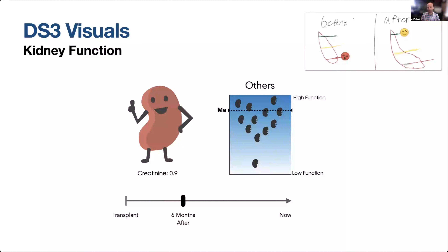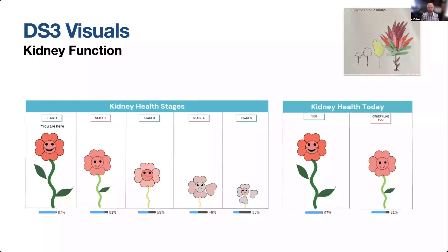Participants overall found this visual appealing, though they had some questions about what the different kidneys and the dotted line meant. But it raised concerns for our research team and clinical colleagues: what would happen if their kidney function was actually relatively poor — high creatinine, low GFR — and they could see they were at the bottom of the comparison? How would that impact their self-efficacy and ability to engage in their own self-care? Another visual analogy we created was a flower representing different stages of CKD, with stage one being a vibrant healthy flower and stage five being a wilting or dying flower. People understood it, but I'm not sure how many people would want to be represented as a dying flower in the later stages of kidney disease.